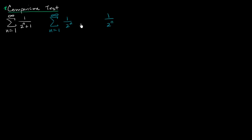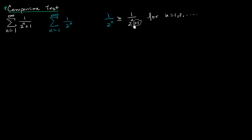One over two to the n is greater than or equal to one over two to the n plus one, for n equals one, two, all the way to infinity. Why? Because this denominator is always going to be greater by one — if your denominator is greater, the overall expression is going to be less. Because each of these terms are all positive, and this series provides an upper bound, and because this series — one over two to the n — we already know converges, by the comparison test, we can say that this one converges.